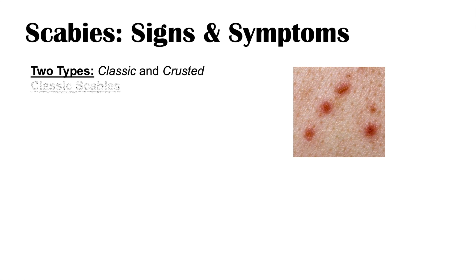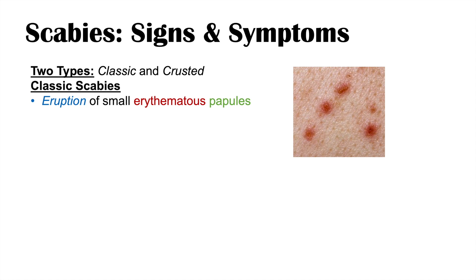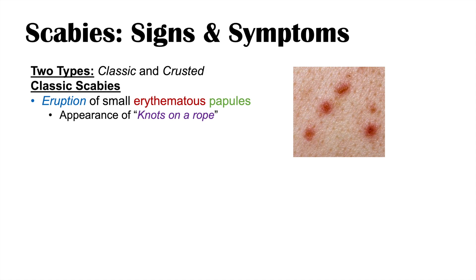There are two types of scabies: classic scabies and crusted scabies. Both have different signs and symptoms and different distribution on the body. Classic scabies involves an eruption of small erythematous papules with an appearance described as 'knots on a rope' — there's a faint line connecting the papules, with the papules representing the knots on that rope.